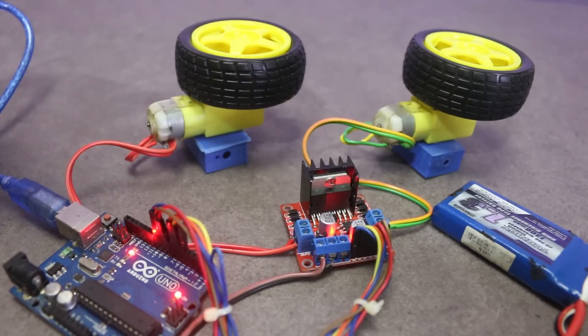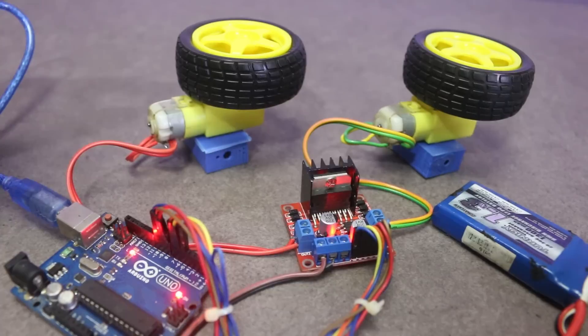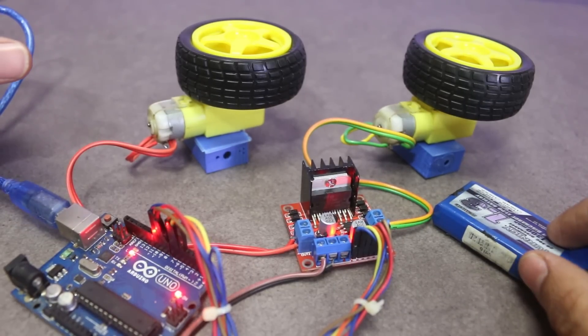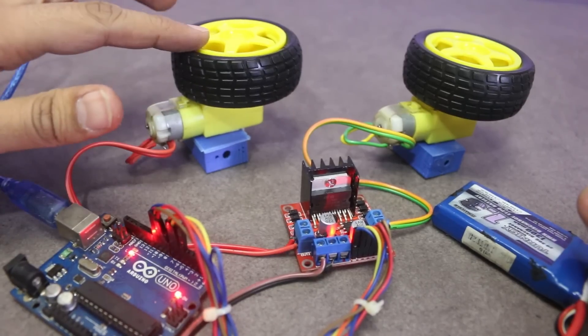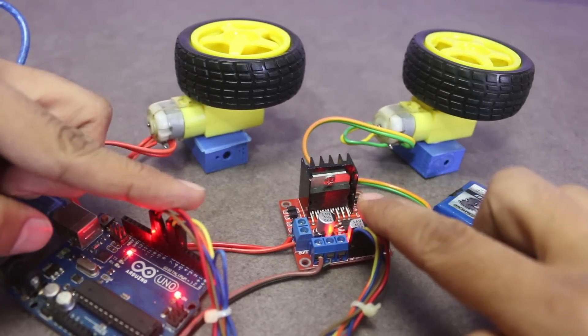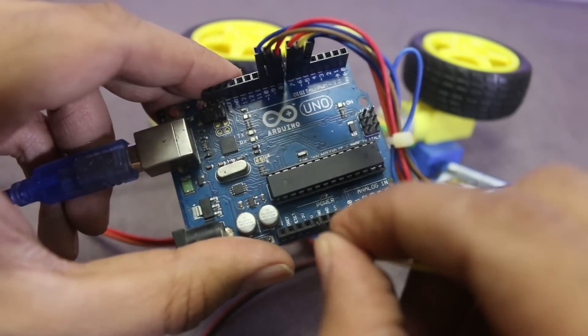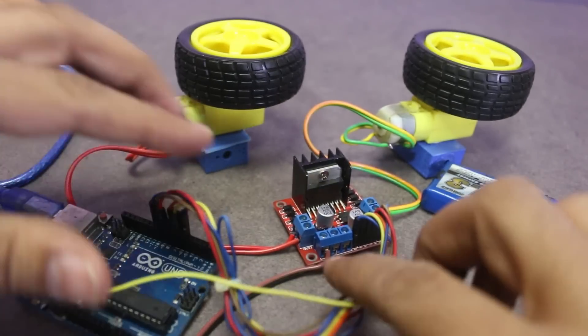Arduino is taking power from the USB cable which is connected with the computer and module is connected with the battery. Whenever you use two power supplies, you have to make sure ground should be common for both. So, let me connect Arduino ground pin with module ground connector.